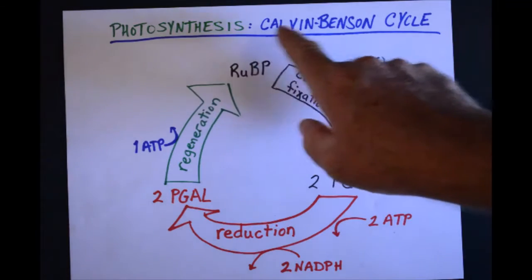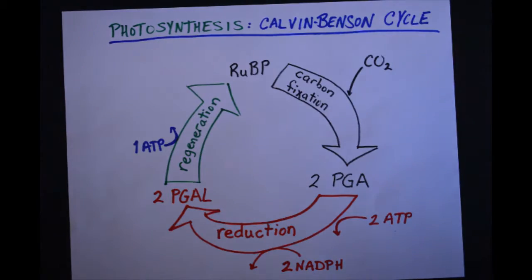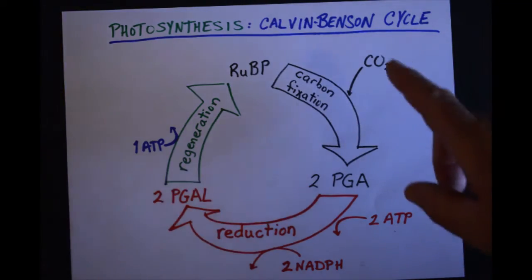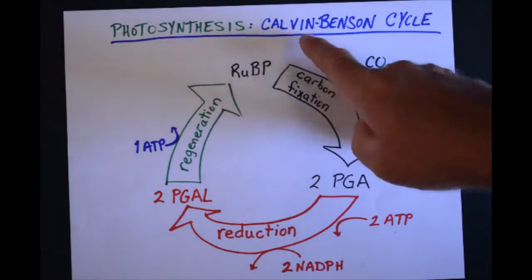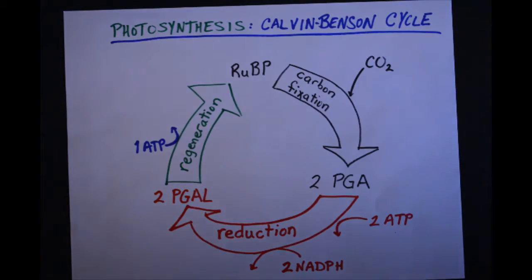The second part of photosynthesis, the Calvin cycle or Calvin-Benson cycle, is an extremely important one and in 1961 earned Mr. Calvin a Nobel Prize.